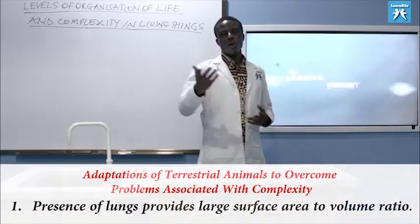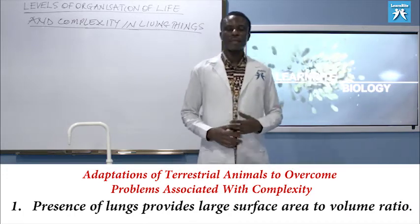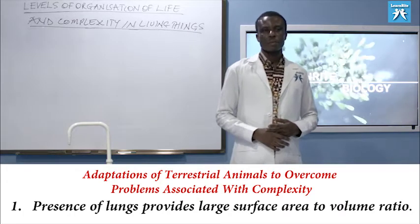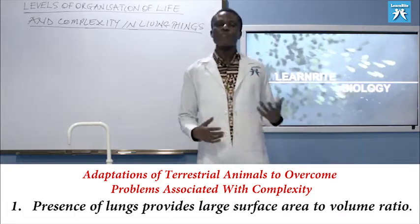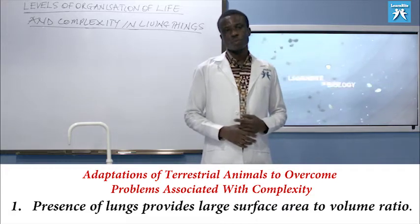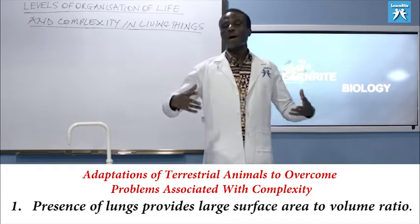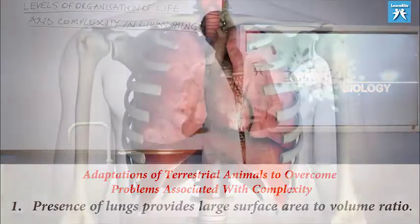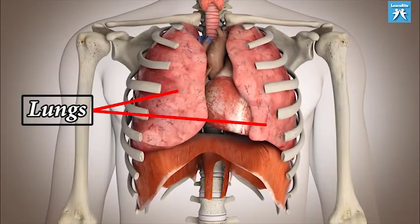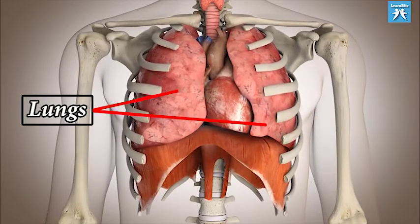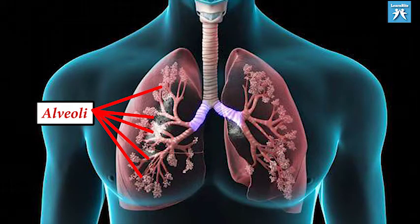Number one: the presence of lungs increases surface area to volume ratio. When we say lungs, we are talking about what lungs are. Lungs have their simplest units — basic units — referred to as alveoli.